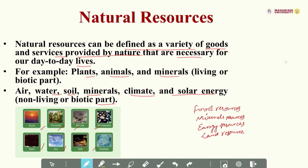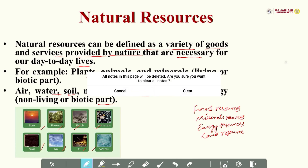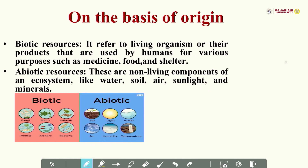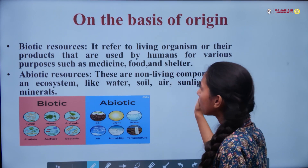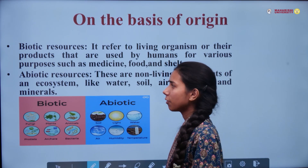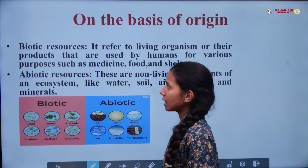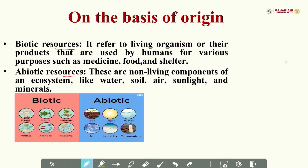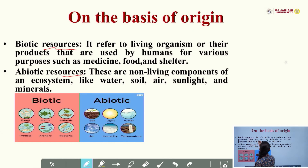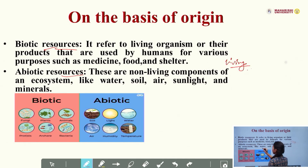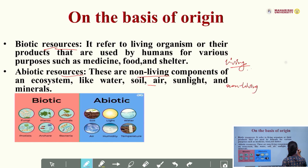Land resource is also a part of natural resources. Next, on the basis of origin, we have classified natural resources as biotic resources and abiotic resources. Biotic simply means living, and abiotic means non-living components.